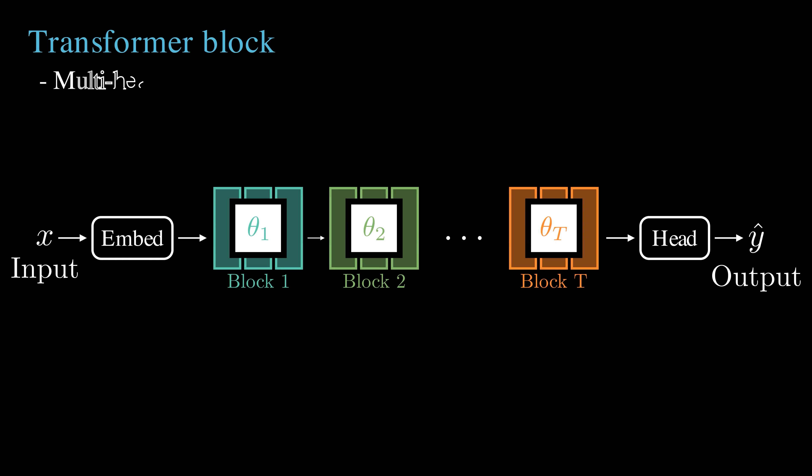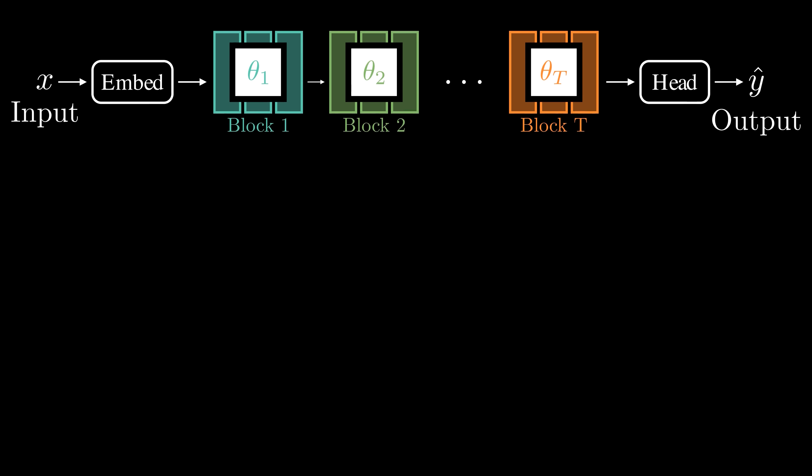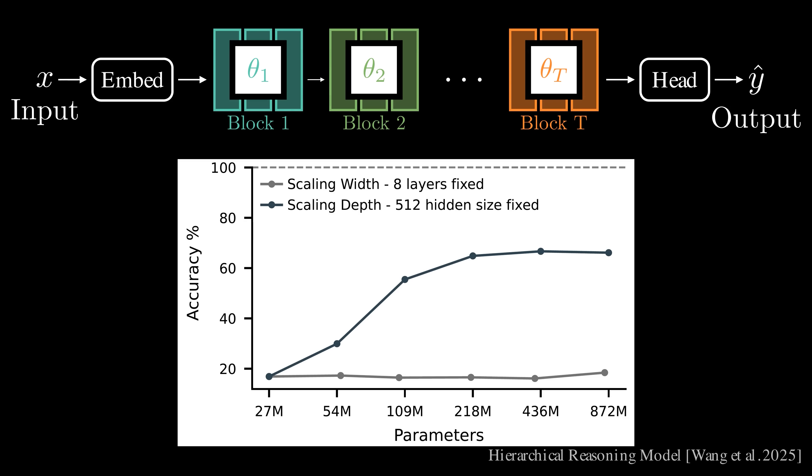These blocks typically consist of multi-head self-attention, feed-forward neural networks, and normalization layers. If we look at the accuracy on Sudoku as we change the number of model parameters, an interesting pattern emerges.